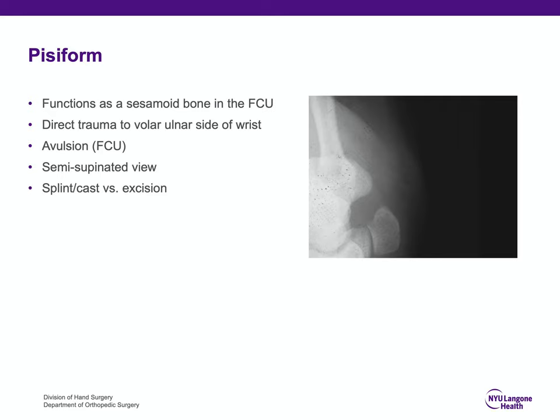If the patient has point tenderness over the pisiform, the appropriate diagnostic evaluation would be a semi-supinated view, as seen here. We can see the pisiform, the hook of the hamate, and the pisotriquetral articulation. This type of fracture is usually non-displaced and treated with removable splint or casting for support.